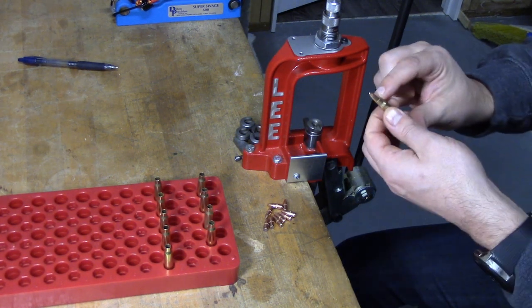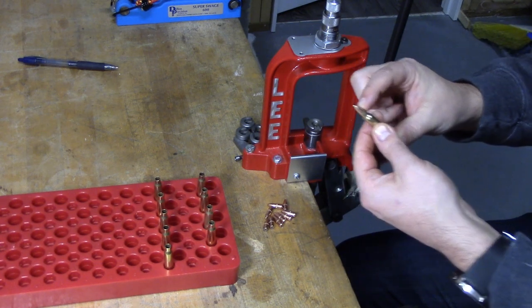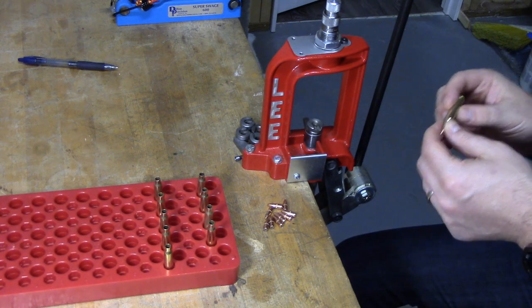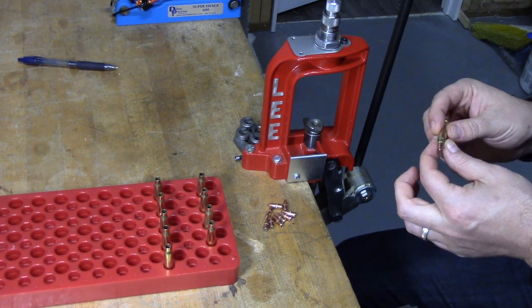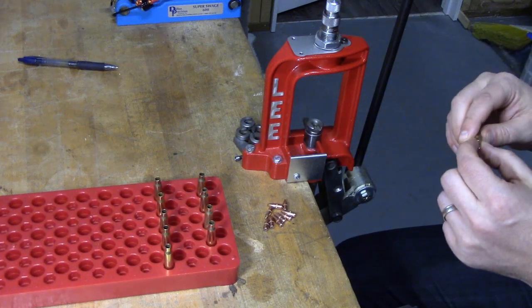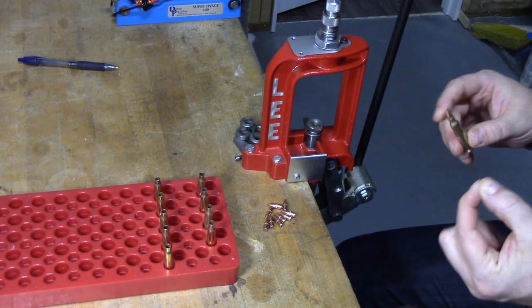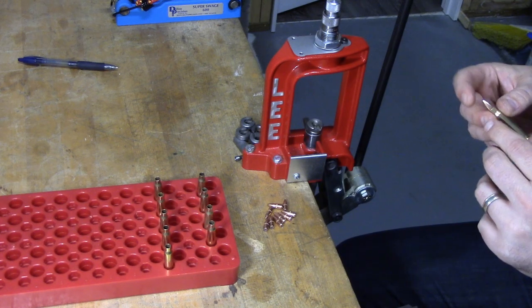And the reason for that is without a crimp, you can get bullets set back when it's feeding, and that can cause excessive pressure. So since these are going to be loaded for an AR, I am going to put a crimp on it. It is going to be a very minor crimp, so we will cover that in the next video.